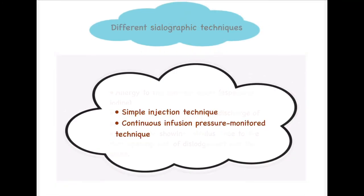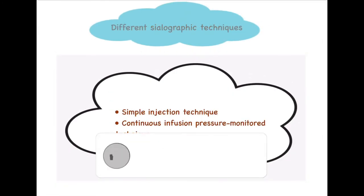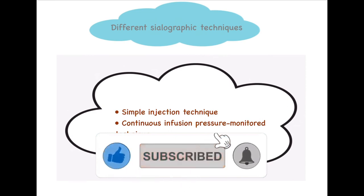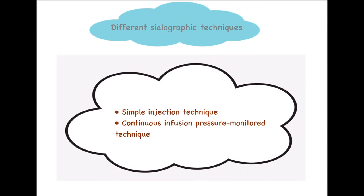Two sialographic techniques are used. The first is the simple injection technique, used routinely. The second is the continuous infusion pressure monitor technique, which allows monitoring of pressure during injection so that excessive pressure is not applied to the ductal system, avoiding damage to the gland.